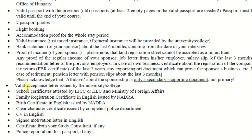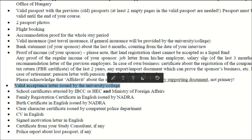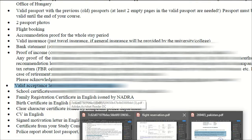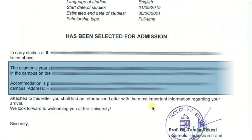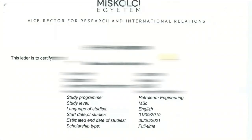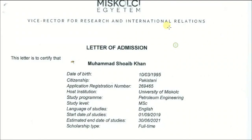Next is a valid acceptance letter issued by the university — the admission letter provided by the university. In our case, a University of Miskolc letter — you have to attach that document. It is a very important document.